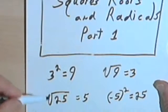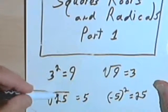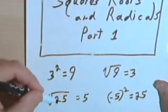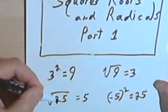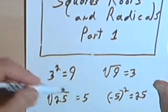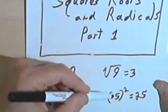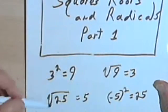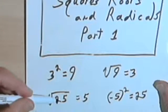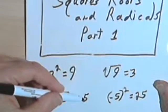Mathematicians have agreed that when they use this radical sign as a square root sign, they're going to only want the square root, which is a positive number. So even though negative 5 squared equals 25, the square root of 25 is only 5. There's no other answer to this.